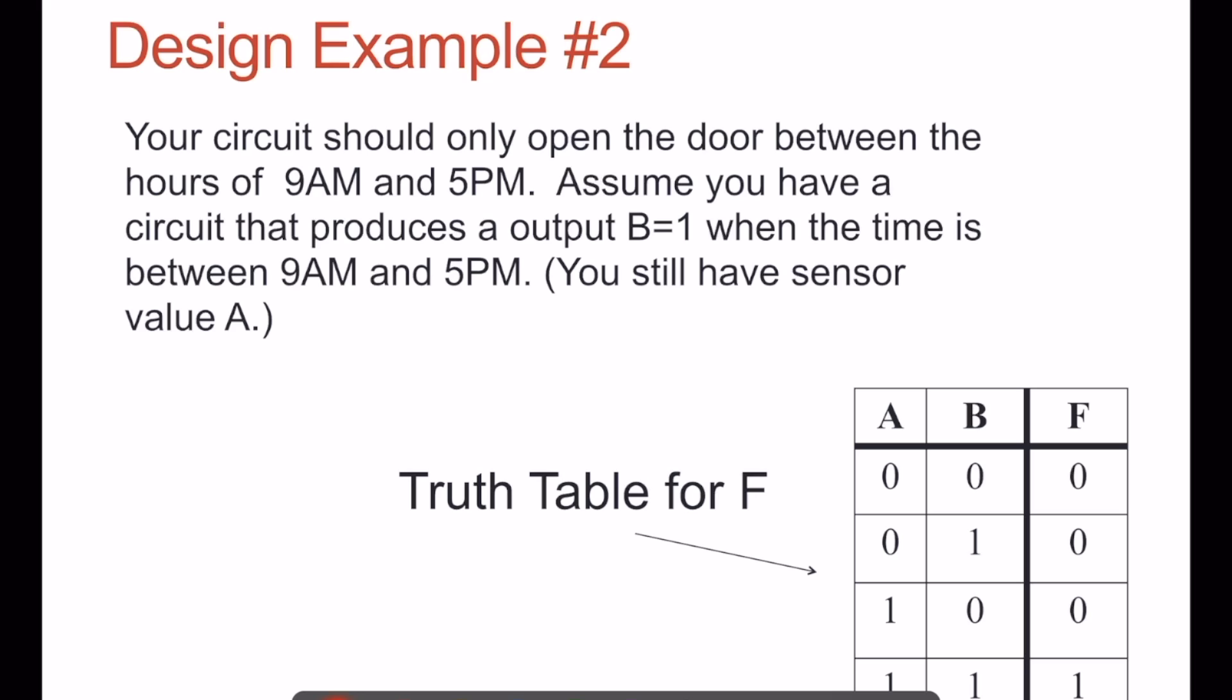We still have the sensor that detects humans or objects in front of the door. If there's not an object in front of the door, we don't open the door. But we only want to open the door if the time is between 9 a.m. and 5 p.m. So if there's an object in front of the door but it's not between 9 and 5, we still don't open the door. And finally, if there's an object in front of the door and it's between 9 and 5, we open the door.